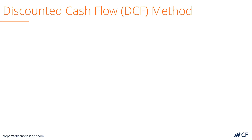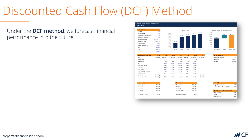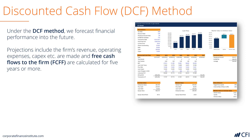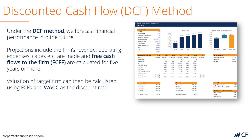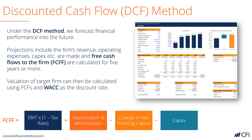The third approach is discounted cash flow analysis. Using the DCF method, it's a form of intrinsic valuation, meaning you don't look at what any other company is worth. Instead, you forecast the company's financial performance into the future. The projections will include several things like revenue, operating expenses, capital costs, etc., and the calculation of free cash flow to the firm. From there, cash flow can be discounted using the firm's weighted average cost of capital. The formula for free cash flow to the firm is shown below and covered in many of our other tutorials.